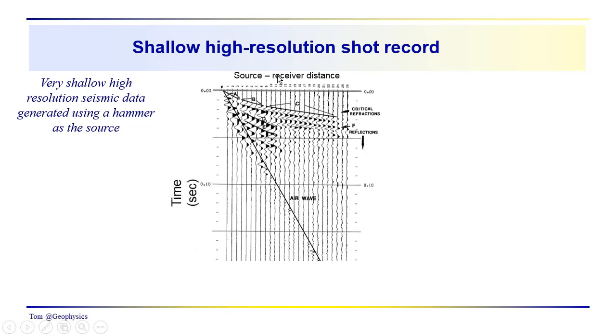And this axis is source receiver distance. And we have time here and this is in seconds. We have a source located over here. And then we have receivers located at each of these points out along the line. We've got a total of 26 geophones in this record, in this shot record.